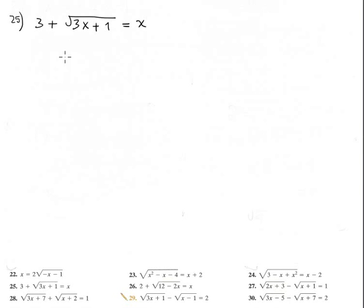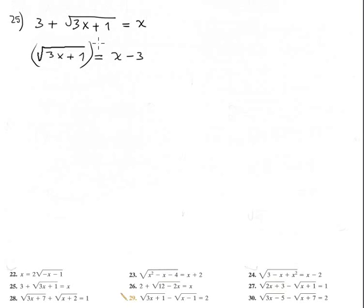Problem 25: radical equation. To solve, isolate the radical, then square both sides to eliminate it. This gives 3x plus 1 without the radical.